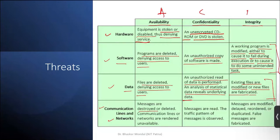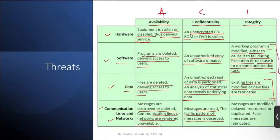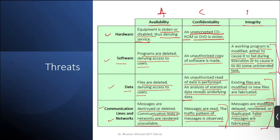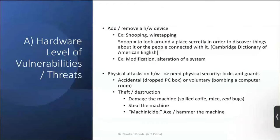For communication lines and networks: messages destroyed or deleted from the communication line itself harm availability. Confidentiality is lost when messages are read or traffic patterns observed. Integrity is compromised when messages are modified, delayed, duplicated, or false messages are fabricated over the channel or communication lines.